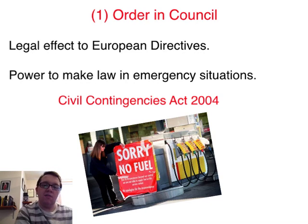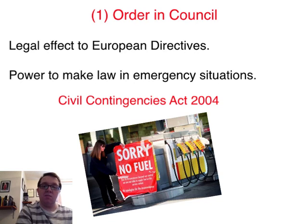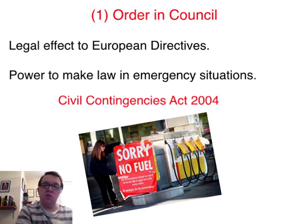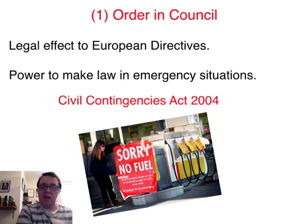As we've seen in the previous video, if this were to go through UK Parliament it may take many months or even a year, and if there is a time limit then the UK has to make sure it's implemented, otherwise they'll be in breach. An Order in Council could be the best way to do that. There's also power to make law in emergency situations under the Civil Contingencies Act 2004. So for example, if there were a national fuel shortage crisis in the UK which led to panic buying, the Prime Minister may well want to use an Order in Council to regulate the situation and specify to the public how much they are allowed to purchase in terms of petrol.